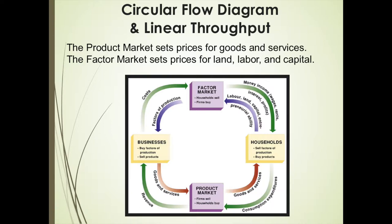Factor prices for labor, called a wage, is a cost to firms who use labor as inputs to produce goods. This is also true of land and capital, which are also factors and a cost to businesses. Cost is the green line moving from businesses to the factor market, where the necessary factors are purchased by businesses for production. This results in income in the economy. Businesses sell goods and services — the red line from businesses to the product market — and earn revenue, the green line from the product market to businesses.